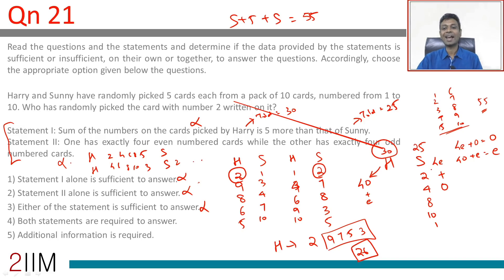If the only even number Harry has happened to be 2, this is impossible. Harry cannot have 2. Sonny has to have 2. Both statements put together, we can answer this question. Answer choice 4.